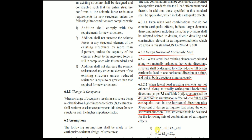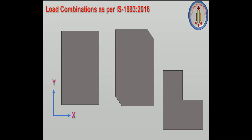This gives two sets of load combinations: (±ELx ± 0.3 ELy) and (±0.3 ELx ± ELy). For a regular structure with X and Y at 90 degrees (mutually orthogonal), one direction at a time is sufficient. For an irregular structure where directions are not mutually orthogonal, we must use these combinations with the 30% rule as specified in IS 1893:2016.